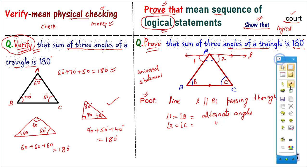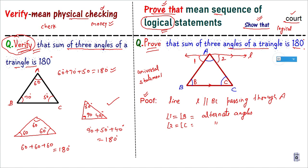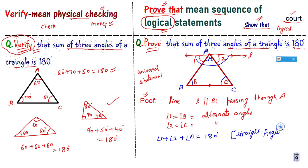Now, these three angles — angle 1, angle A, and angle 2 — together form a straight line. The reasoning is that they form a straight angle, and a straight angle equals 180°. Since angle 1 = angle B and angle 2 = angle C, substituting: angle B + angle A + angle C = 180°. Thus the sum of all three angles of the triangle is 180 degrees.